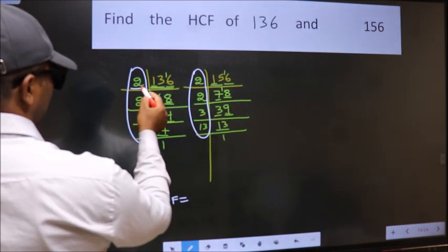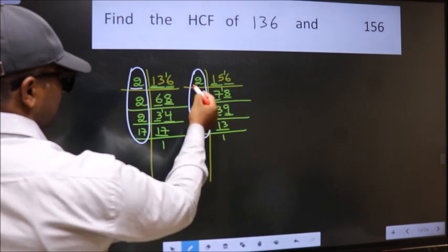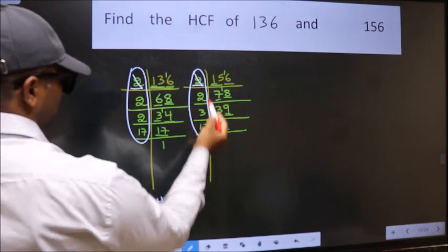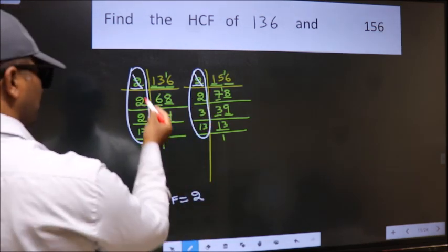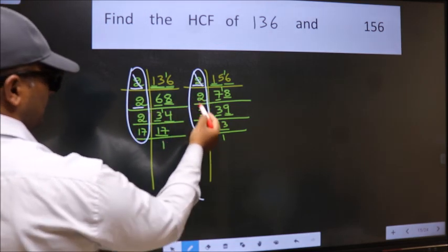Starting with the number 2. Do we have 2 here? Yes. So cut 2 right here. Next number 2. Do we have 2 here? No.